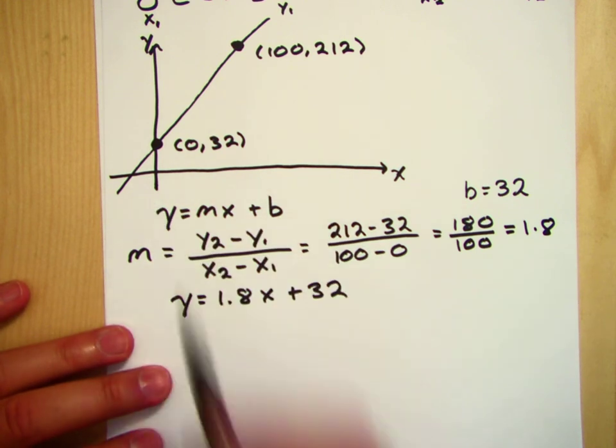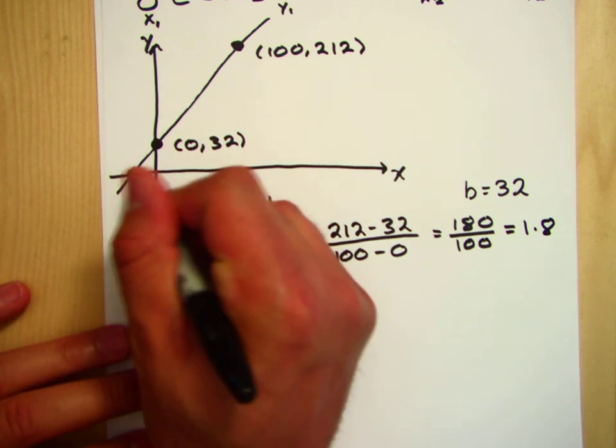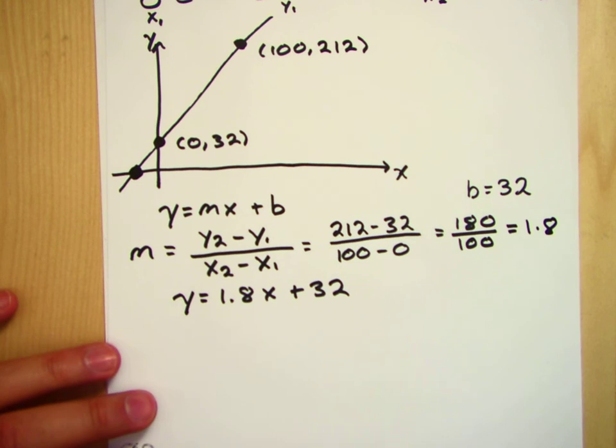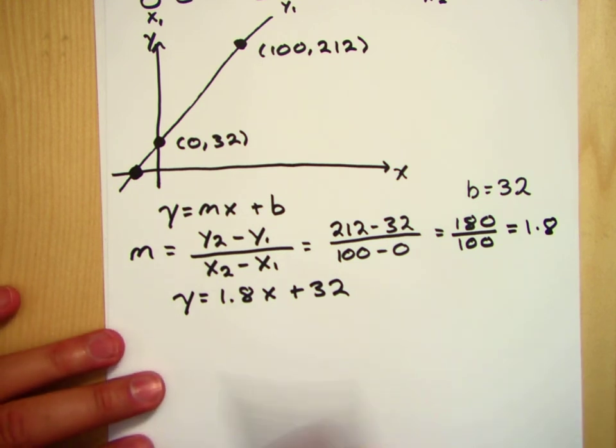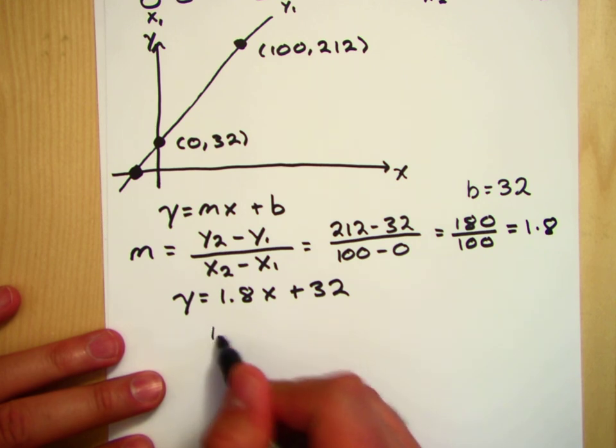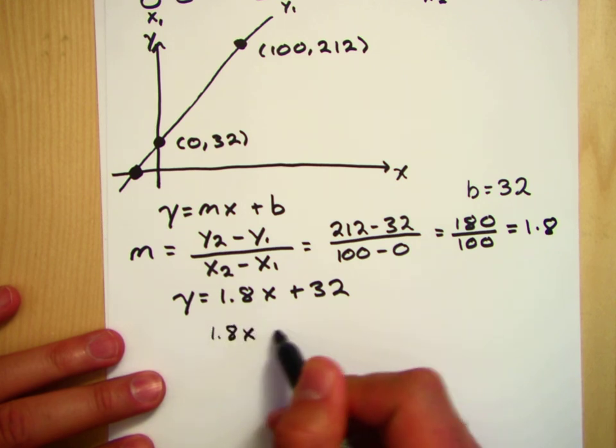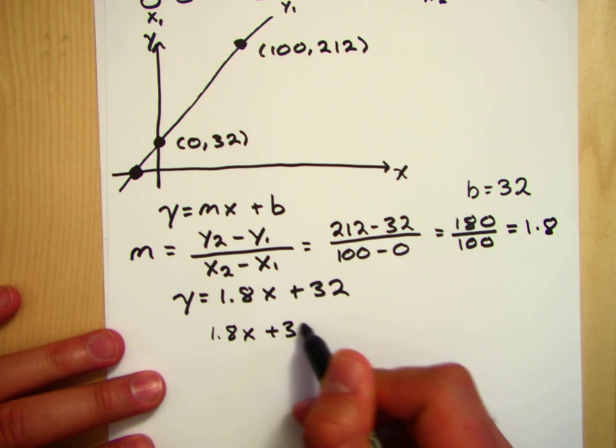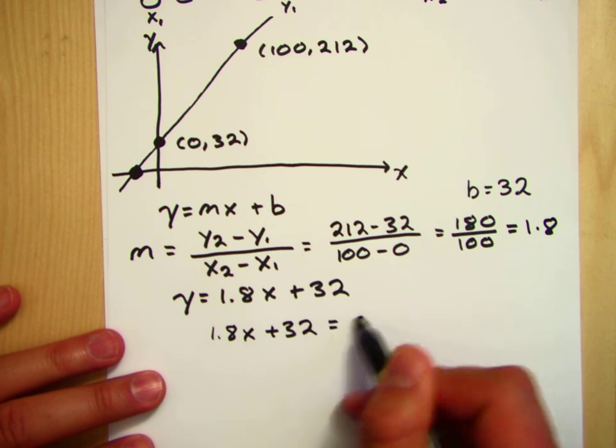So then the question becomes, the last question we have to answer is, what's this point right here? What's the x-intercept? And so that's going to be when y is equal to 0. So let's set this thing equal to 0. So what happens when 1.8x plus 32 is equal to 0?